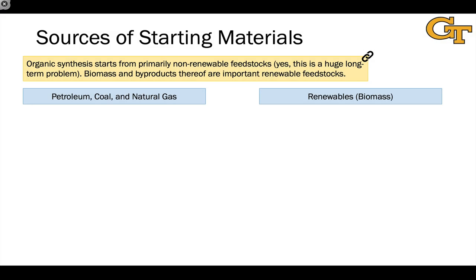Where do we get the simple starting materials that are really the building blocks of organic synthesis? If you're a practicing chemist, you often buy them from places like Sigma-Aldrich, Acros, or Alpha Aesar — any chemical company. But where do they get their starting materials?